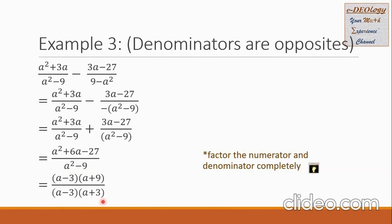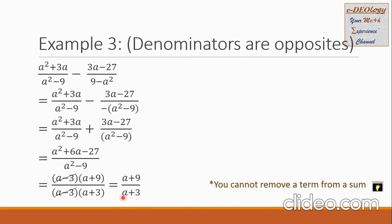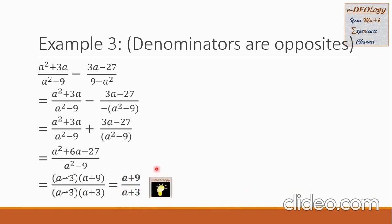The denominator factors into a minus 3 times a plus 3. We cancel the common factor a minus 3 in the numerator and denominator, and collect the remaining factors. So we have a plus 9 all over a plus 3. The next question is: can we cancel the a and the a, or the 9 with the 3? The answer is no — we cannot remove a term from a sum. The a and 9 in the numerator are part of the sum, as are a and 3 in the denominator. So a plus 9 over a plus 3 is our final answer.